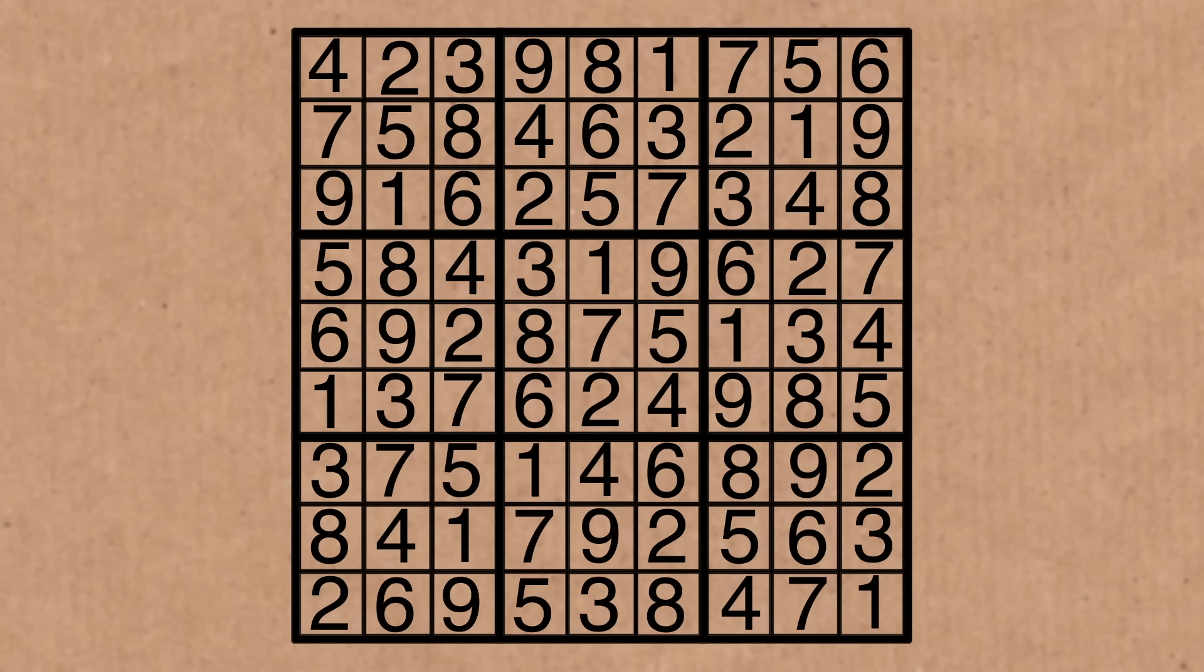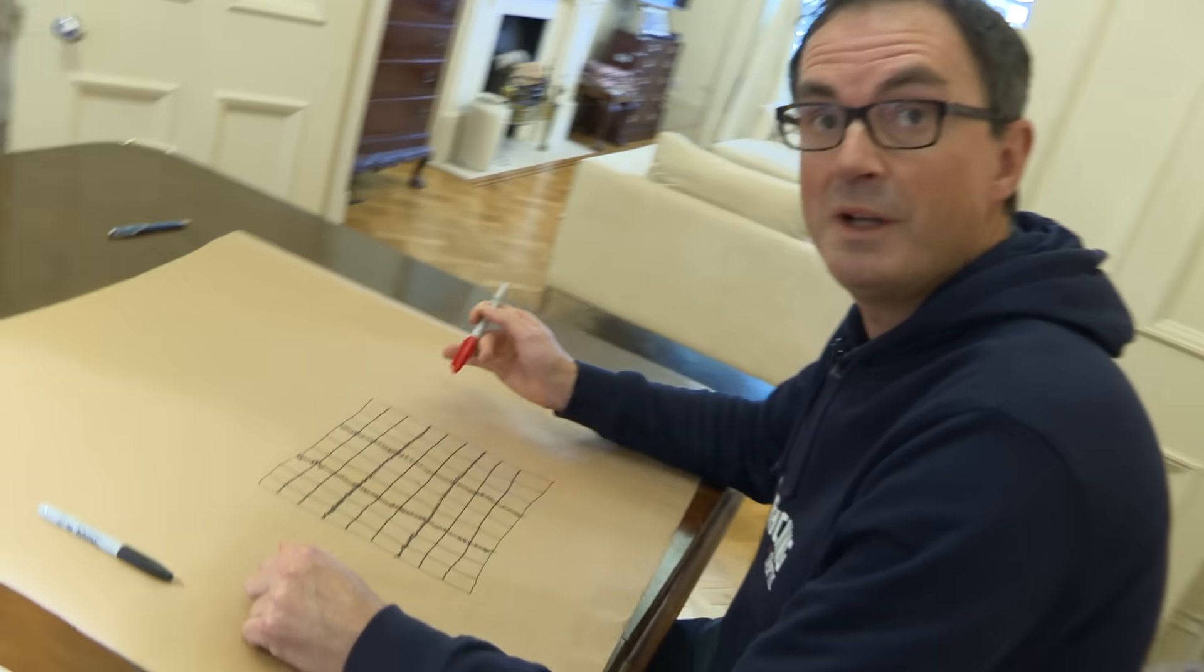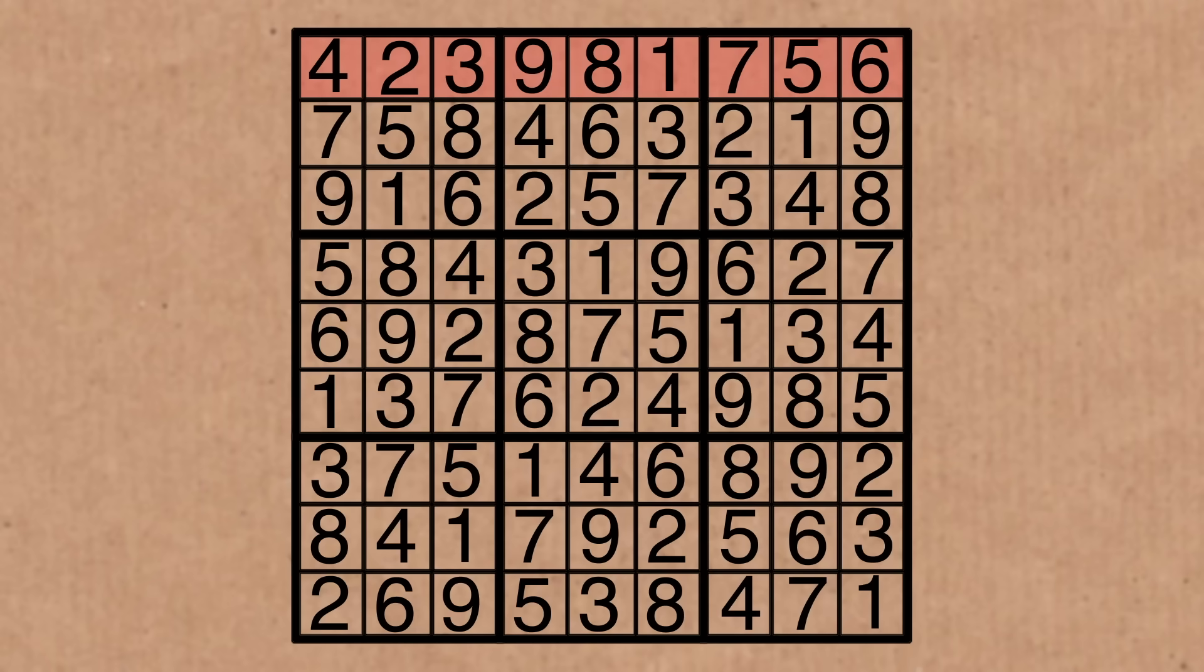That is our Sudoku and what I'm going to show you now is something called set equivalence theory. So we know that in this Sudoku, if we complete it correctly, there will be the numbers 1 to 9, once each in every row, column and box.